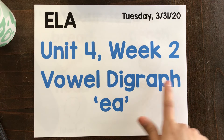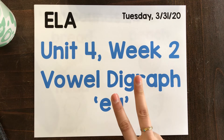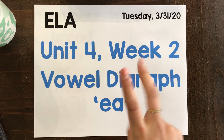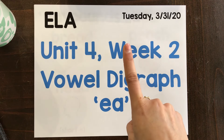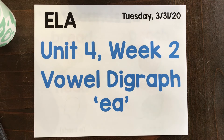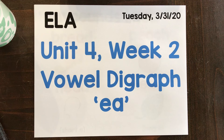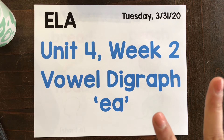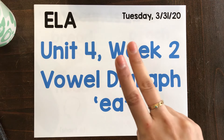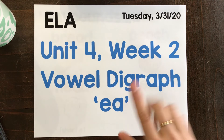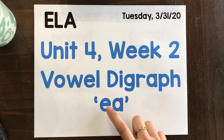Remember, a digraph is when two letters come together and make one sound. Some examples are CH says 'ch', CH says 'sh', TH says 'th'. All of those are digraphs because they are two letters that come together and make one totally new sound.